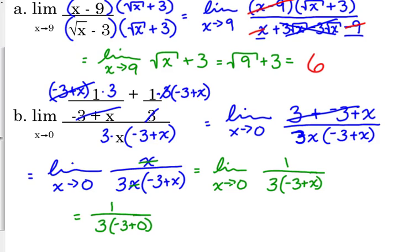Now we can plug in 0 and we won't have a problem anymore. And we'll get a final answer of negative 1 over 9. So plug in 0 for x. Negative 3 plus 0 is negative 3. 3 times negative 3 is negative 9. It's only negative in the denominator, so it is equal to negative 1 over 9.